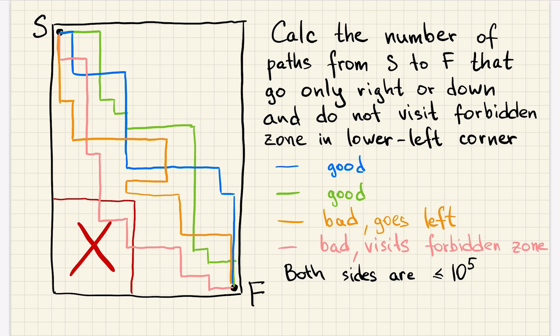On the picture you can see some good paths, green and blue. The yellow path is bad because it moves to the left here, and the pink path is bad because it visits the forbidden zone.